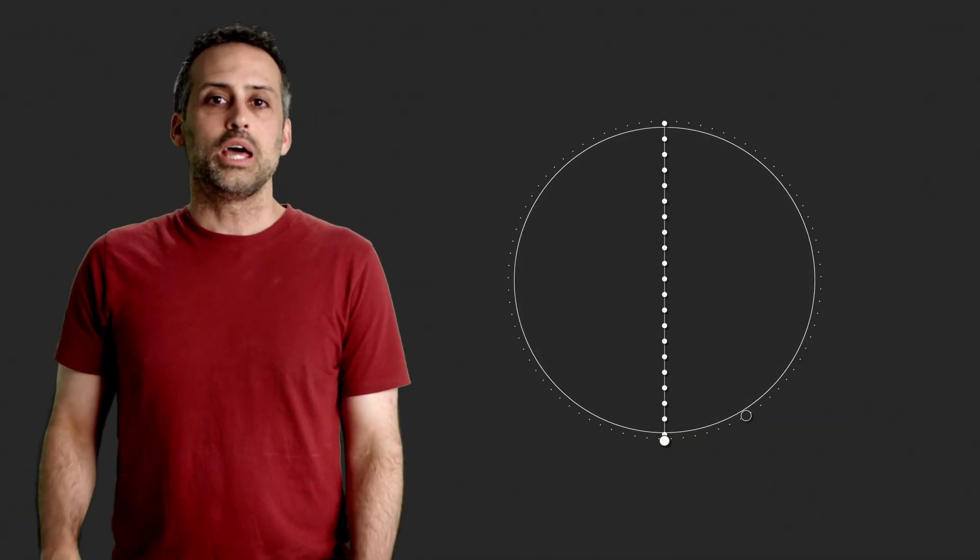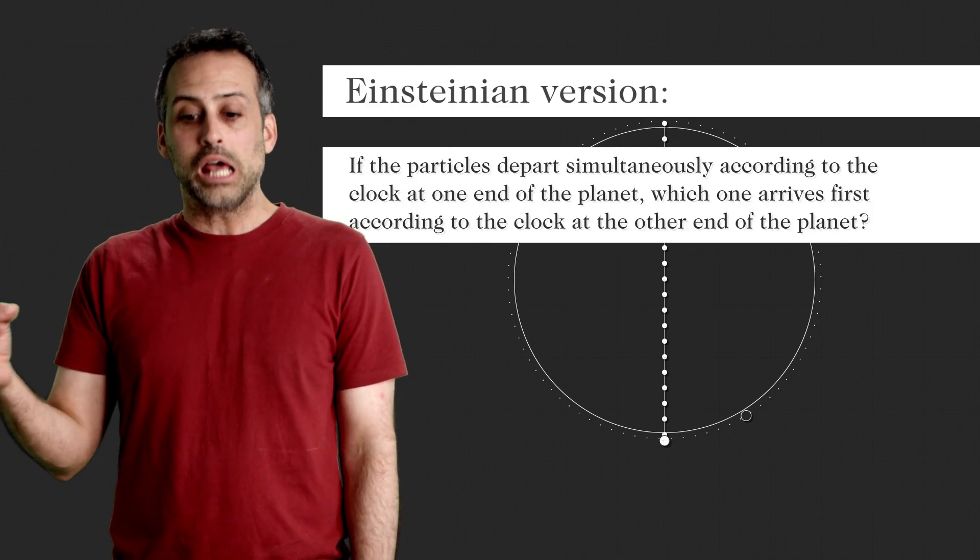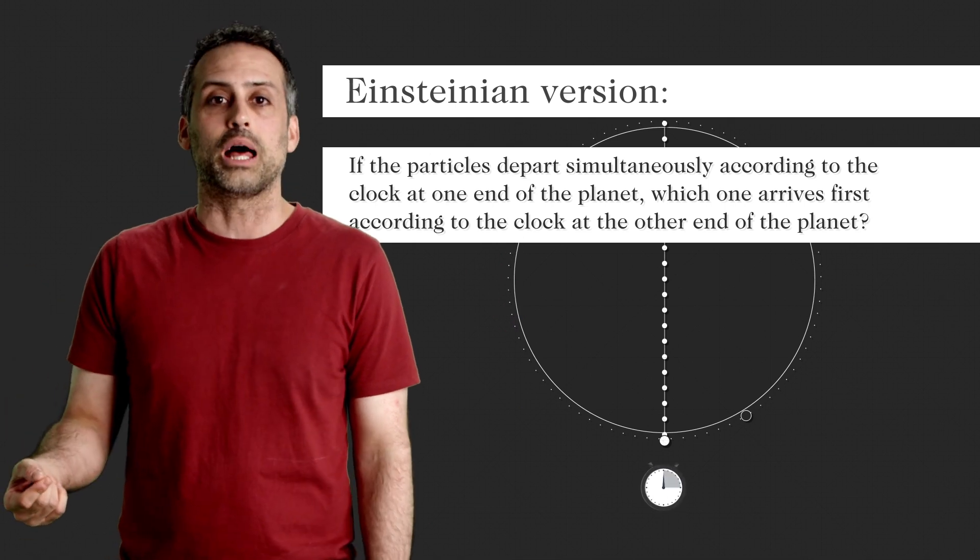Finally, I want to discuss the Einsteinian version of this question. Namely, if the particles depart simultaneously, as measured by the clock at one end of the planet, which one arrives first, according to the clock at the other end of the planet?